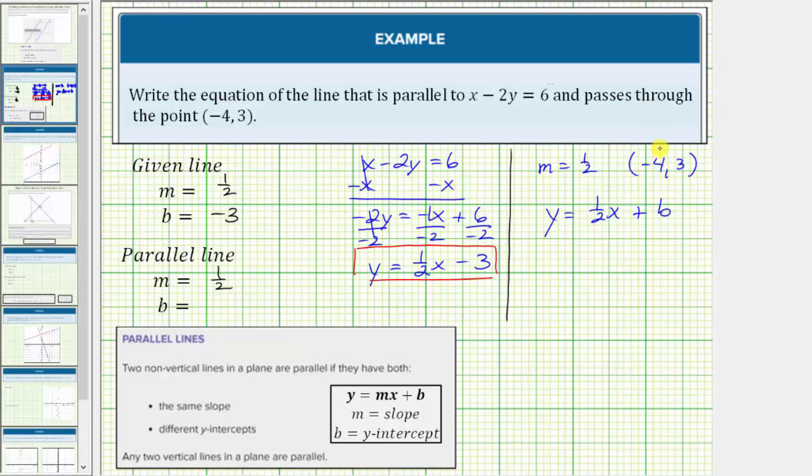So what we can do is substitute -4 for x, positive 3 for y, and then solve for b to determine the y-intercept. Once we find the y-intercept, we can write the equation. So we'll substitute 3 for y and -4 for x. So we have 3 equals 1/2 times -4, which equals -2. To solve for b, we add 2 to both sides. Simplifying, we get b equals 5. So the y-intercept of the line parallel to the given line passing through the point (-4, 3) is positive 5.